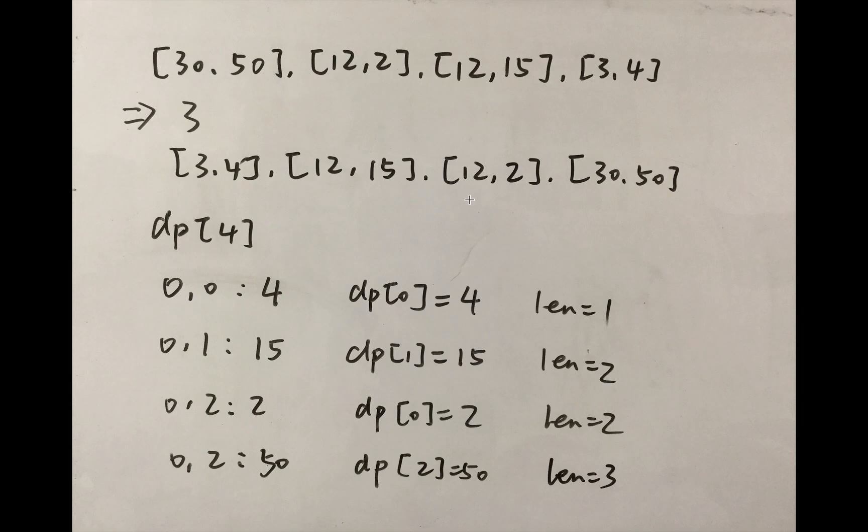And then we search for the 2. And the 2 does not exist in the DP array. But the place we need to insert this 2 is 0. So we update DP[0] to the 2. But the length keeps the same.